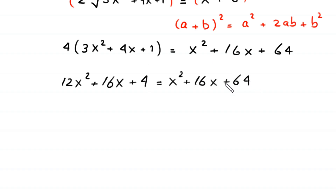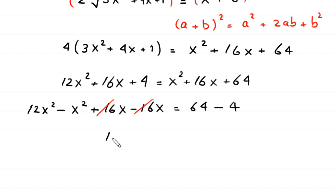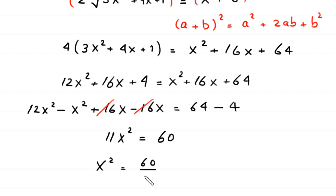Distributing the 4 on the left gives 12x squared plus 16x plus 4, equal to x squared plus 16x plus 64. Moving terms: 12x squared minus x squared gives 11x squared; the 16x terms cancel; and 64 minus 4 gives 60. Dividing both sides by 11, this implies x squared is equal to 60 over 11.